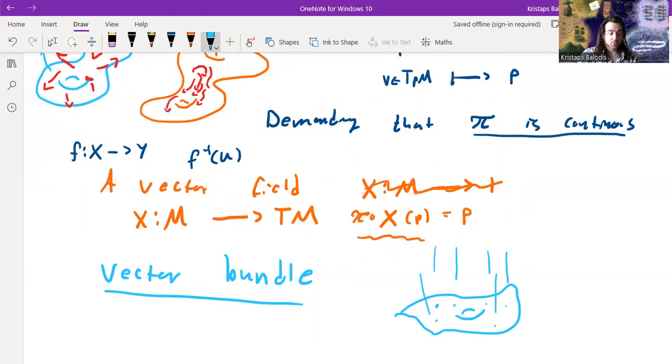So a vector bundle, more generally, is we can take any sort of vector space we want, sort of imagine it hovering above each point in our manifold, and then gluing it together in some sort of topologically coherent fashion.